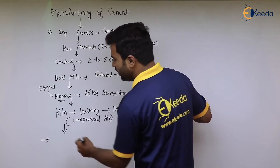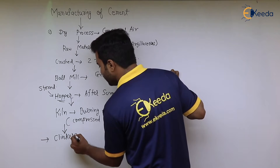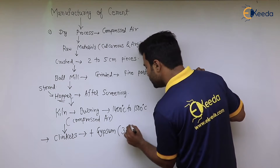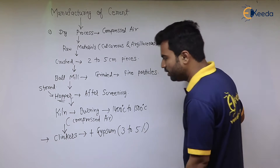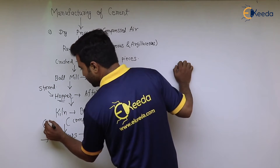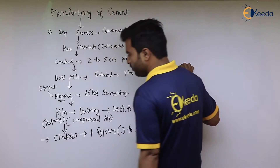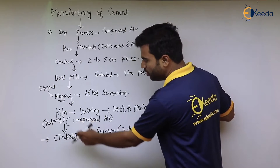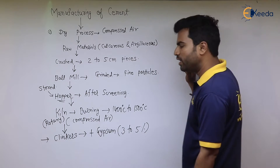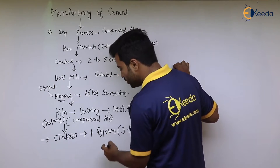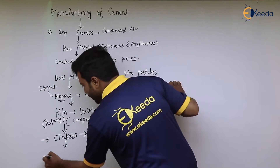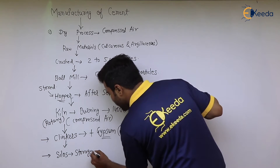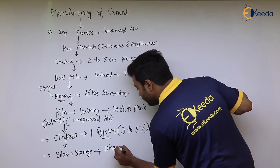They are burned until clinkers are formed. After the formation of clinkers, gypsum is added at generally 3 to 5%. The kiln is a rotary type kiln. After clinker formation and gypsum addition, the material is stored in silos and finally dispatched after packing.